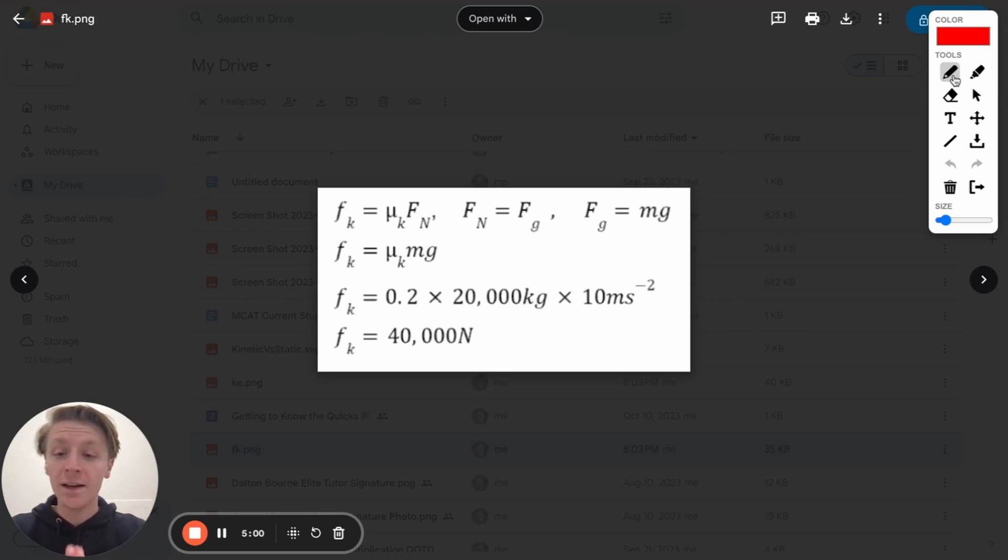So we need to figure out what the frictional force is that's acting on this train. And that allows us to figure out how much work friction did, as opposed to the superhero. We have this equation here that allows us to figure out the kinetic frictional force, which is that force acting on the train. That's made up of this coefficient, which we have, which is great, and also the normal force, which we don't have. So that might be tricky.